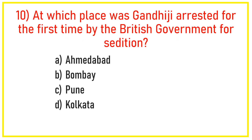Q10. At which place was Gandhiji arrested for the first time by the British government for sedition? Answer: Option A — Ahmedabad.